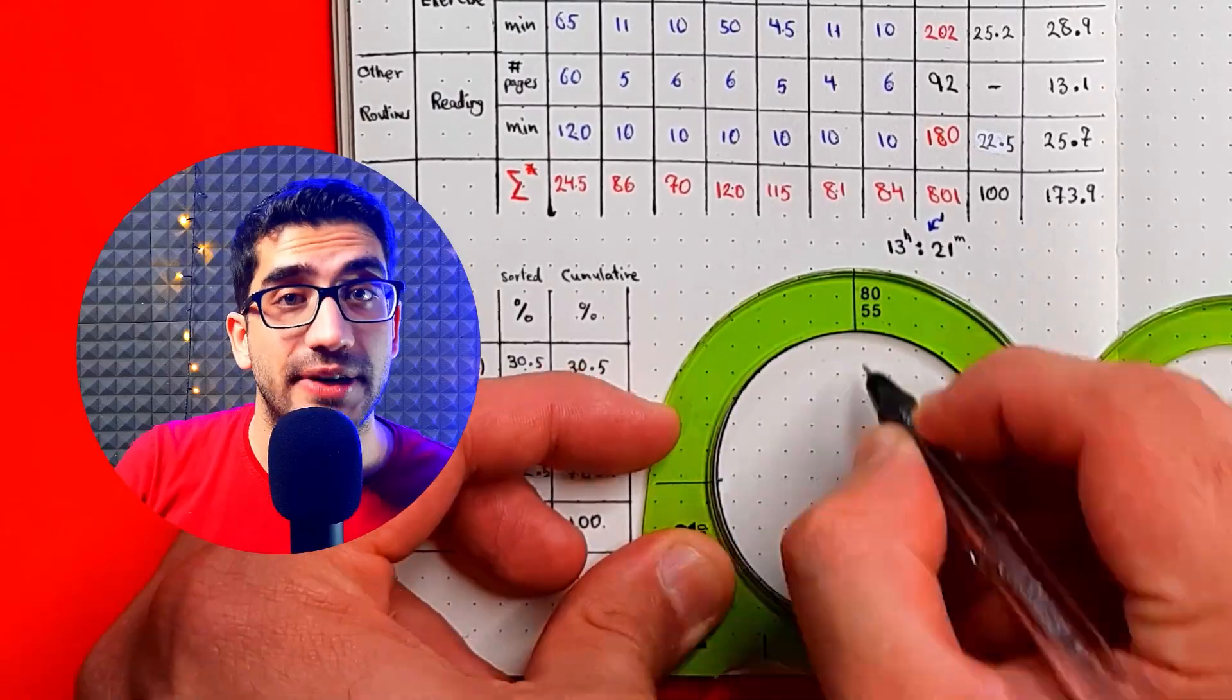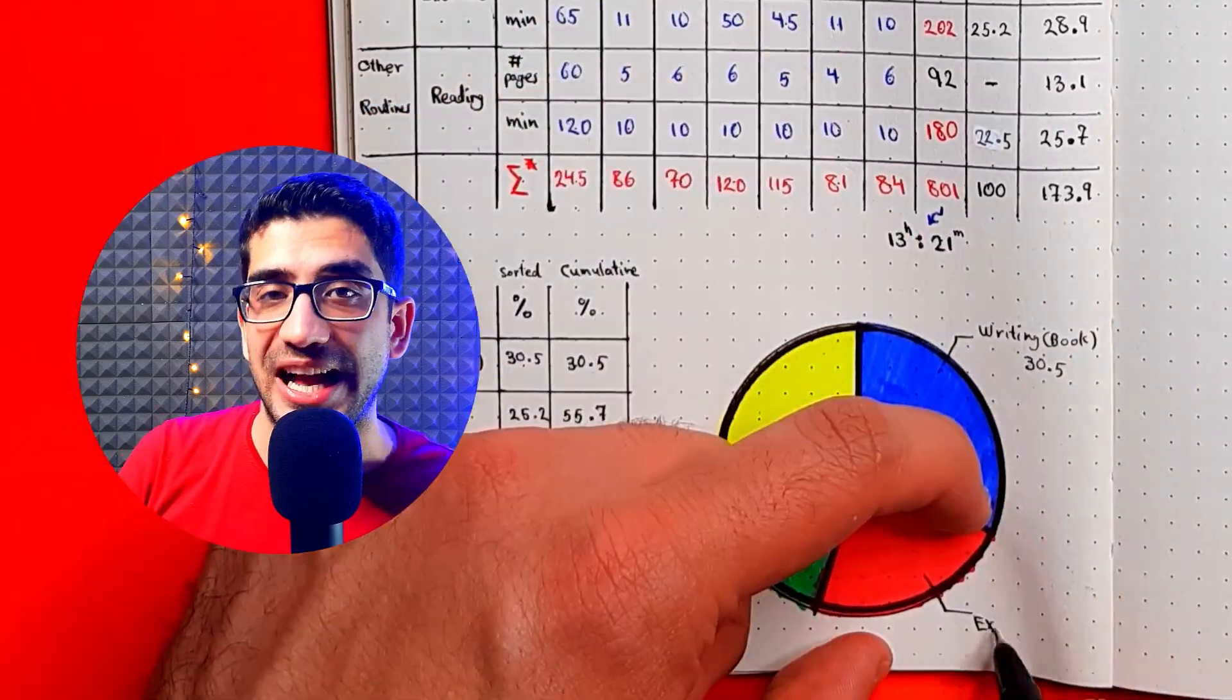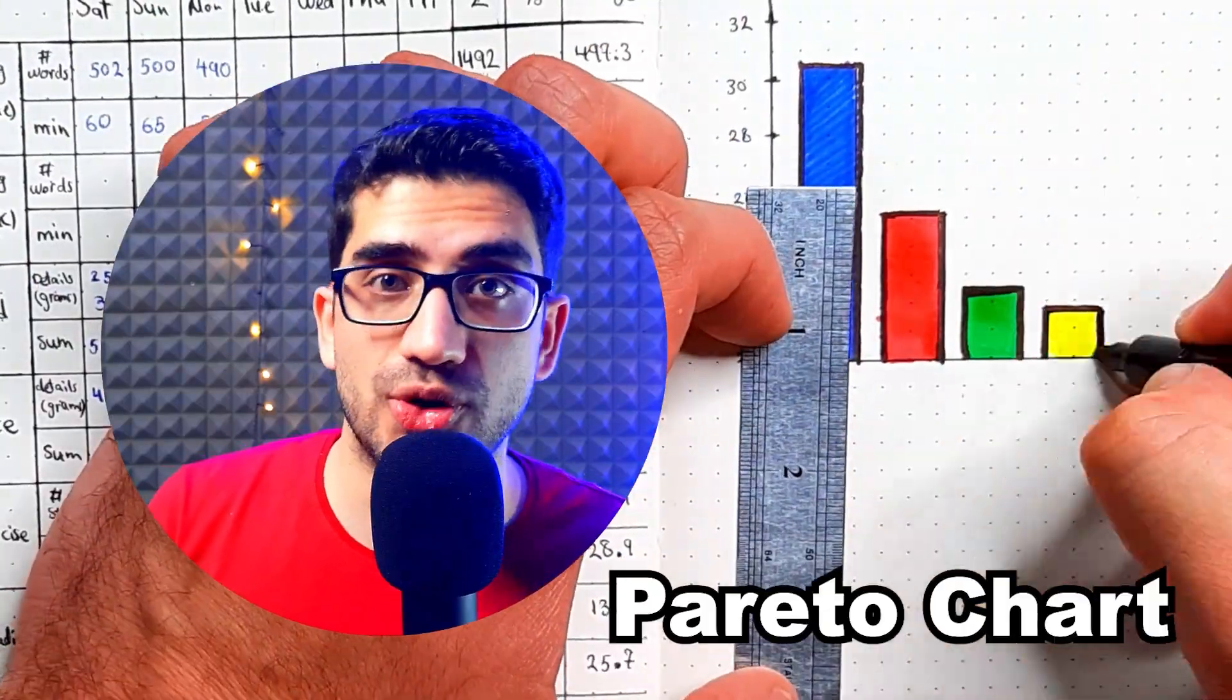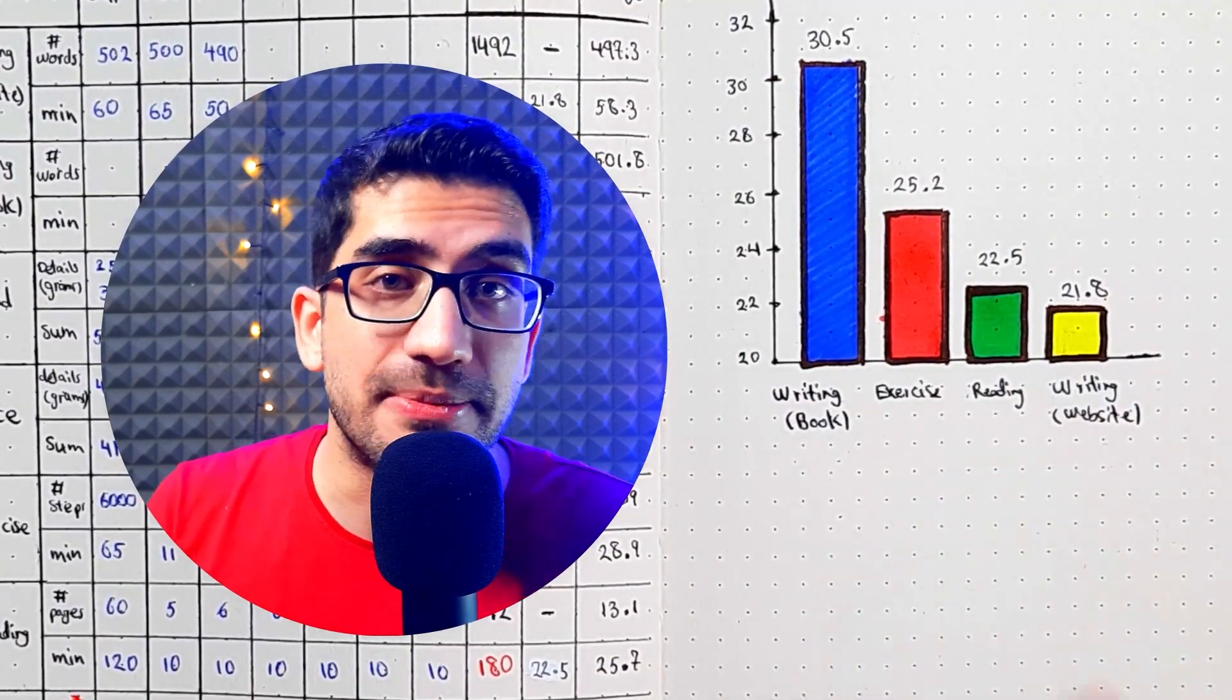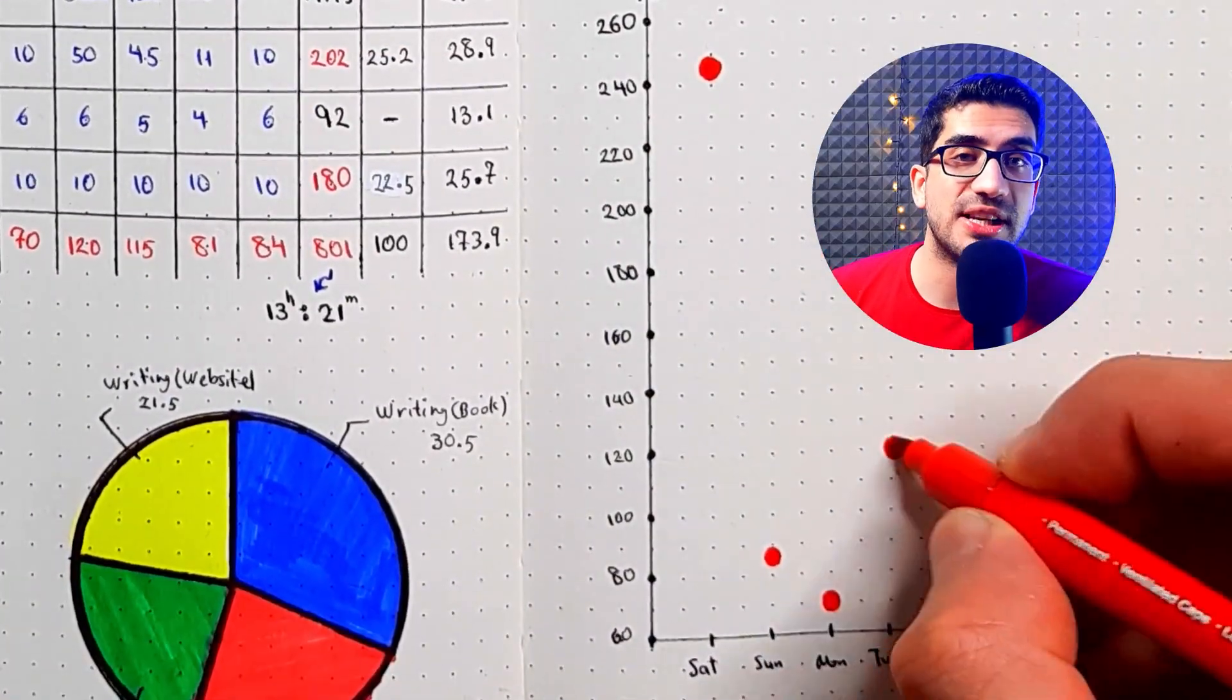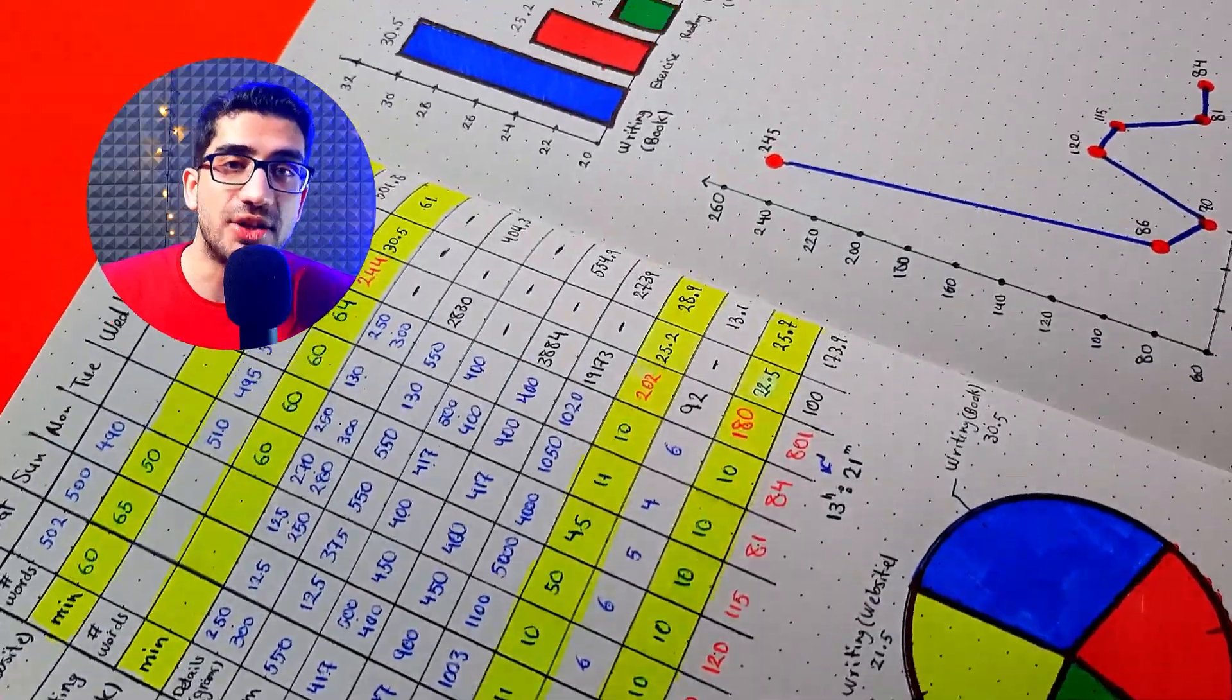Before going to the next step, I should mention that you can plot different charts. You can plot a pie chart to see what percentage of your time has been spent on each of your goals. And also you can plot a Pareto chart to get visual feedback of Pareto principle in your time assignment. And plotting different line charts gives you a very good insight of your progress throughout the time. But if you want to keep it minimal, you can skip these charts.